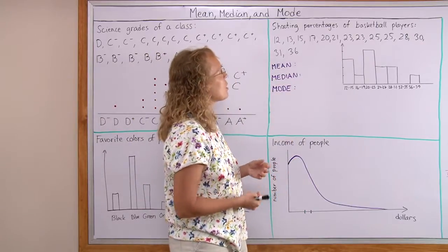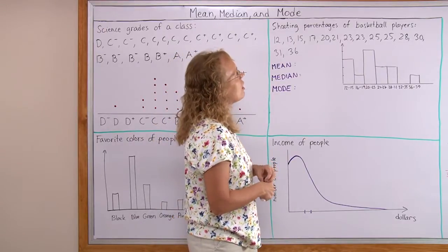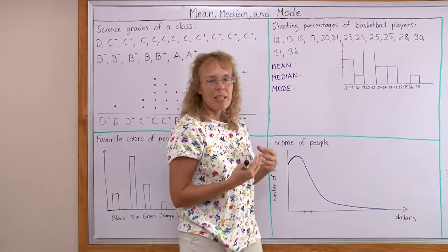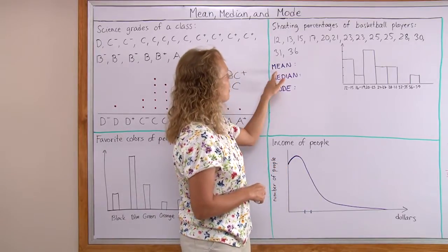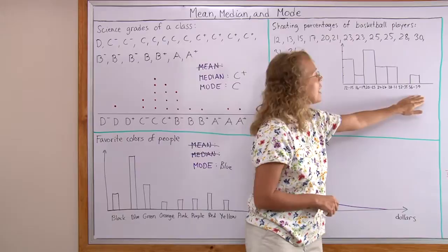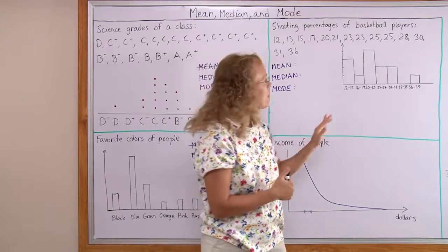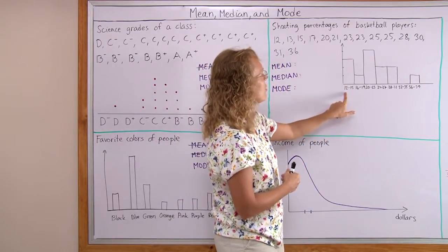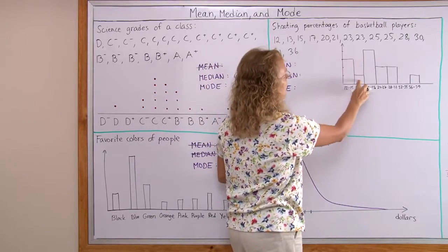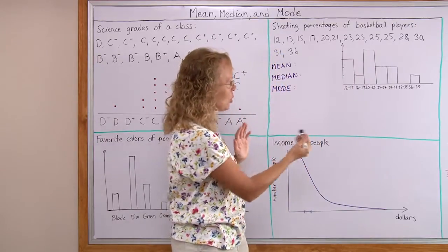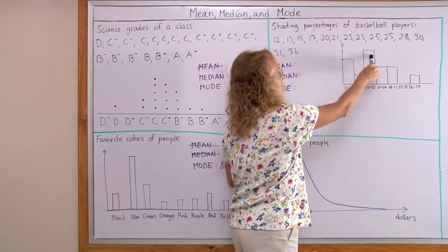Here, these numbers are shooting percentages, or field goal percentages if you want to think of them that way, of basketball players. These are just basic percentages like 12%, 13%, just to keep it simple. And now let's find out mean, median, and mode. Here is the distribution as a histogram. This kind of bar graph where the bars are touching each other is called a histogram. For 12% to 15%, there's three players. And 16% to 19%, there was one player, and so on. We can see from the graph already that the center of this distribution is somewhere here.